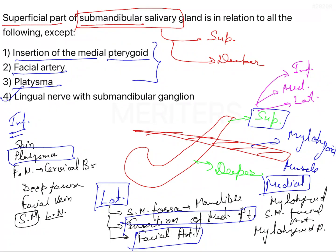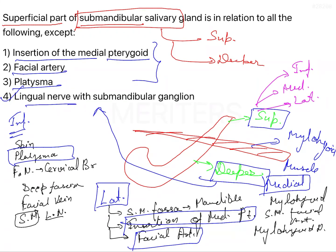The lingual nerve and the submandibular ganglion are situated deeper to the deeper part of the submandibular gland — not the superficial part. So the lingual nerve and submandibular ganglion are in relation to the deeper part of the submandibular gland.